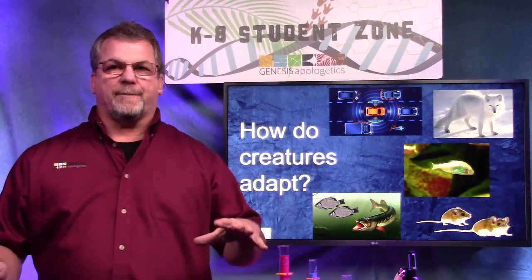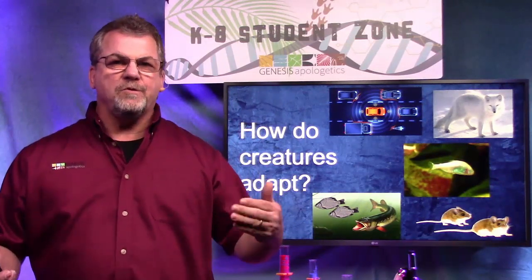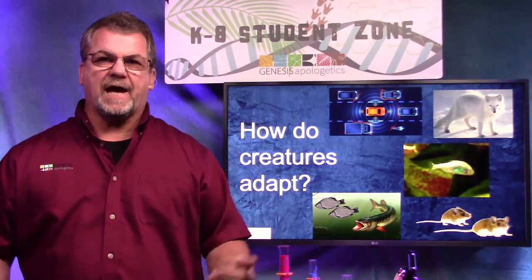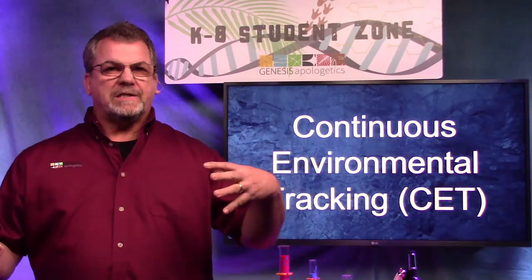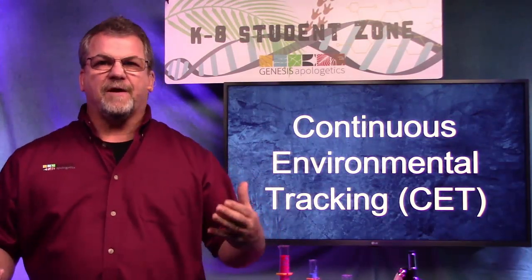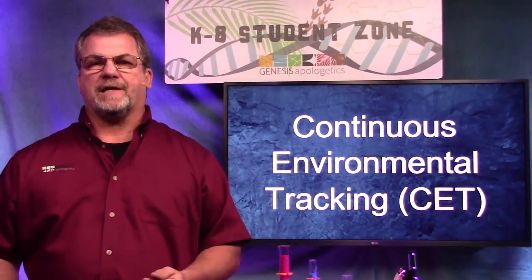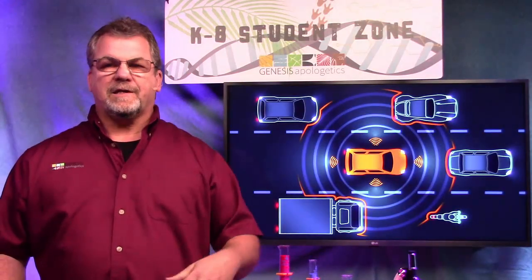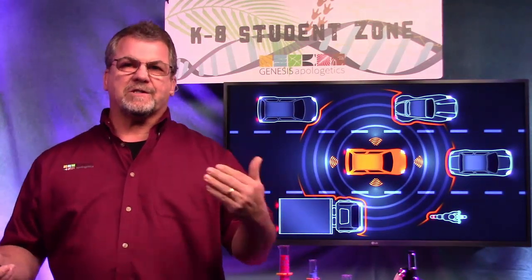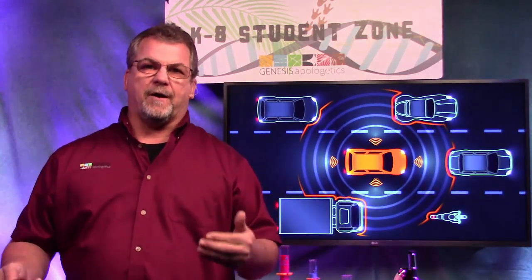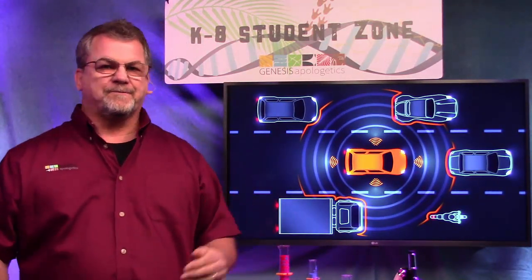So let's talk about today's topic: how do creatures adapt? Creatures use a system called continuous environmental tracking. To give you an idea of how that works, let's start by talking about cars.